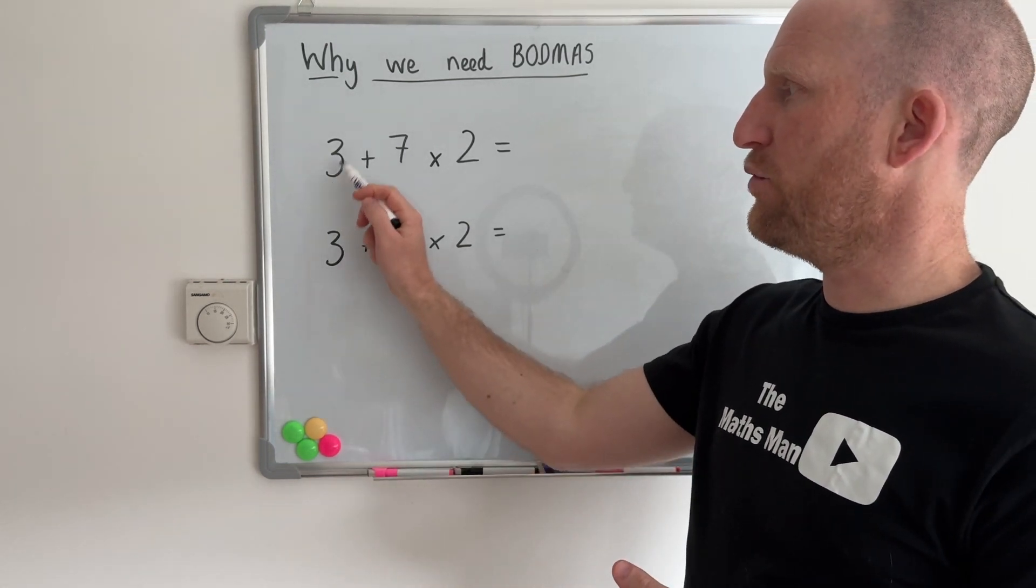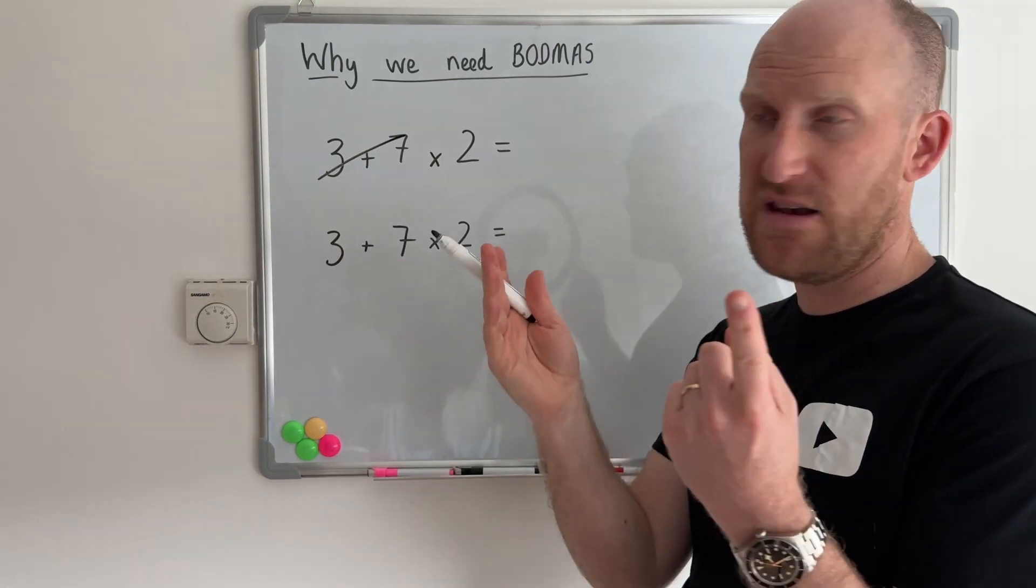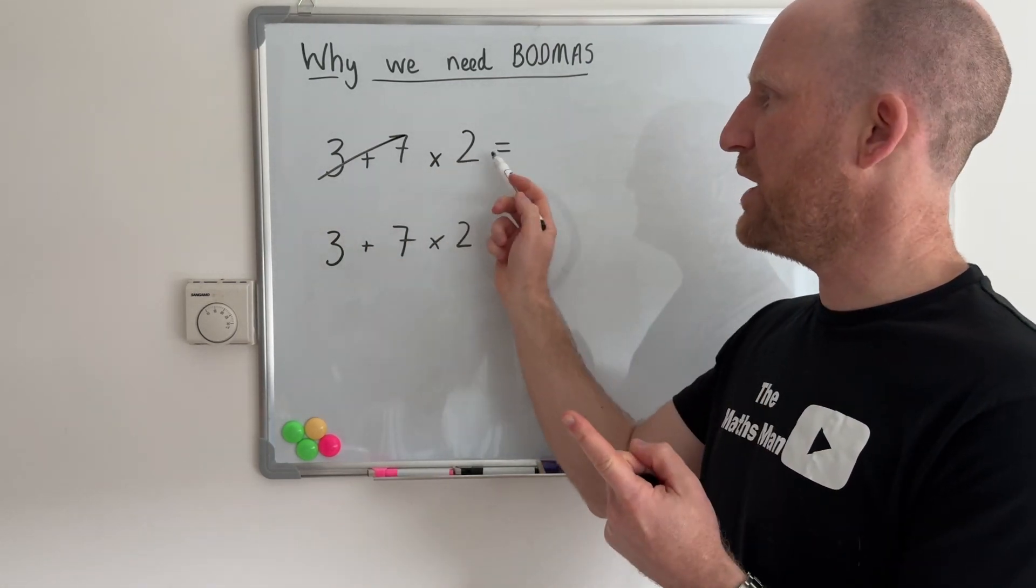So if I do 3 plus 7 first I get 10 and then if I multiply that 10 by 2 I get an answer of 20.